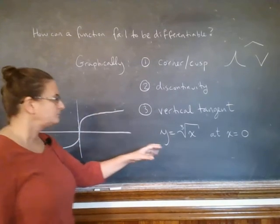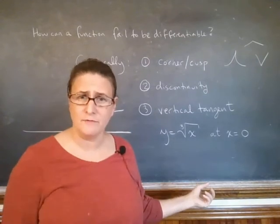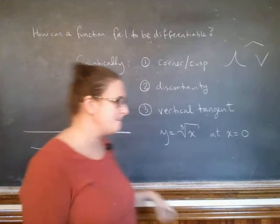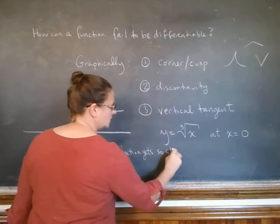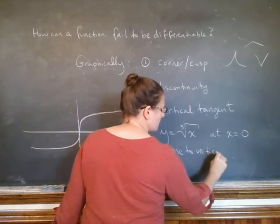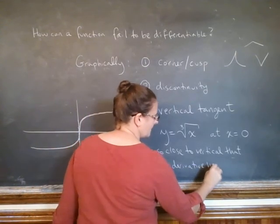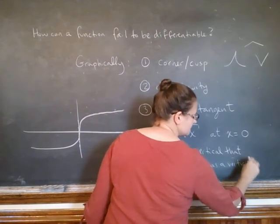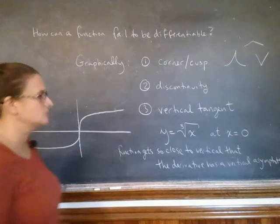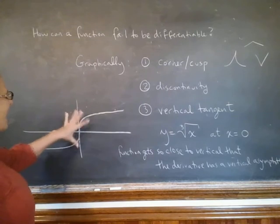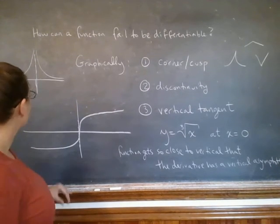So, if the function itself is defined fine at x equals 0, if I were to graph the derivative, though, the derivative has an asymptote. So, when we say function gets so close to vertical, that the derivative has a vertical asymptote. Okay, I should write out the word asymptote. So, in fact, if you look at the graph of the derivative here, it actually does look like that. It looks something like this. We'll get to that.